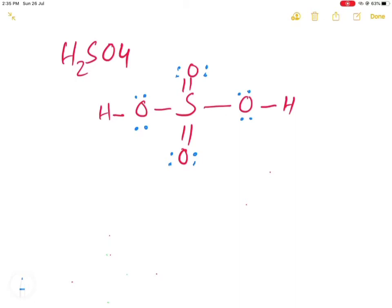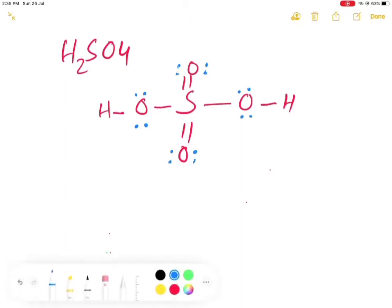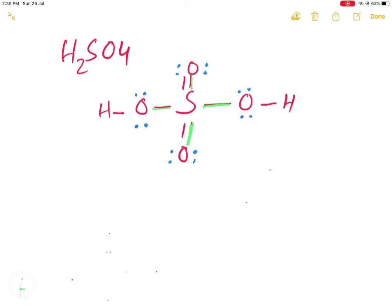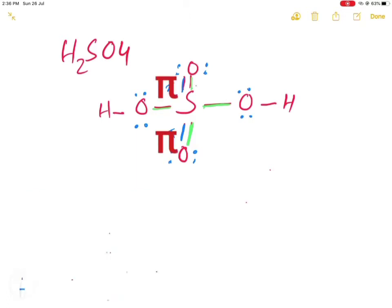Let us apply the trick first. According to the trick, the type of hybridization of sulfur is sp3. In case of sulfur, there are four sigma bonds: 1, 2, 3, 4. The pi bonds are not taken in the trick — pi bonds are not due to hybridization. So this sulfur has 4 sigma bonds.